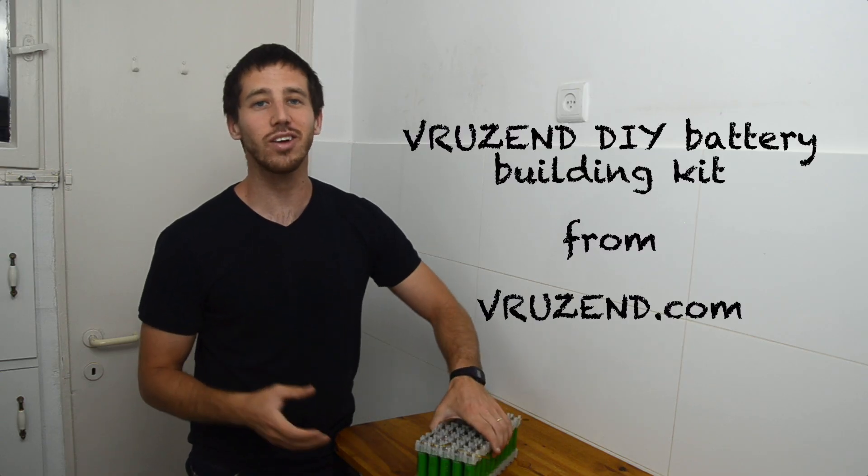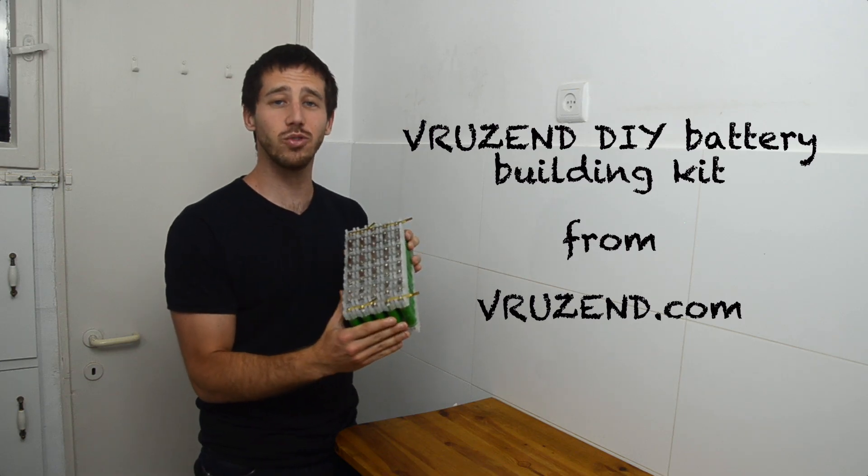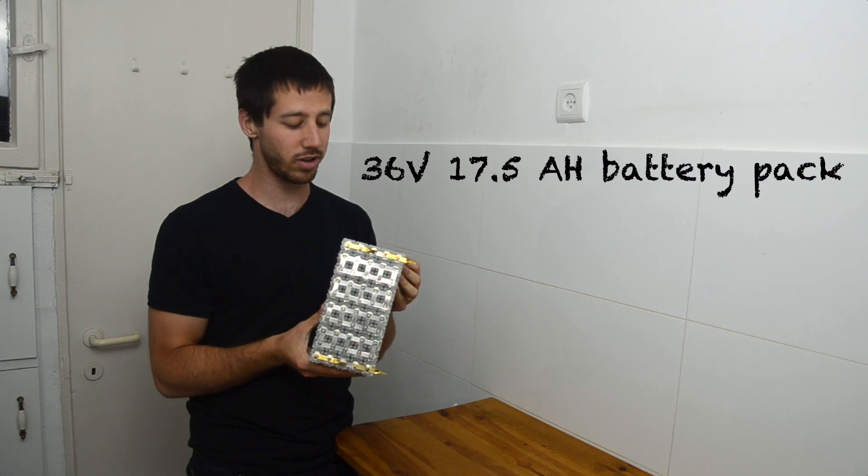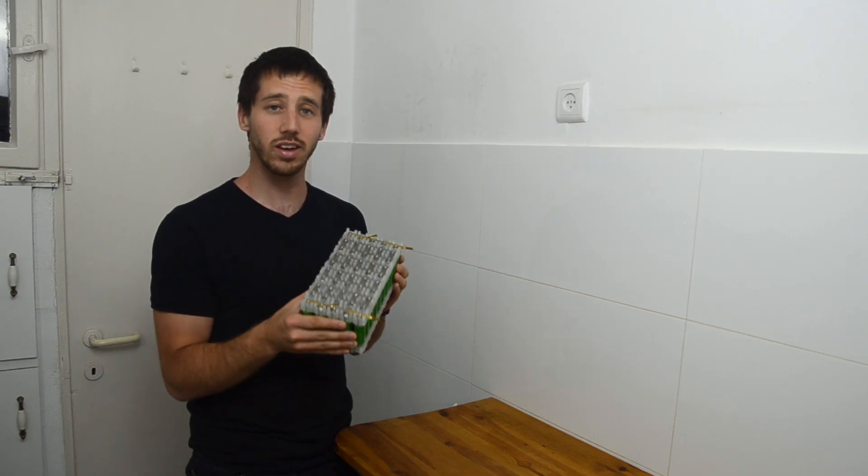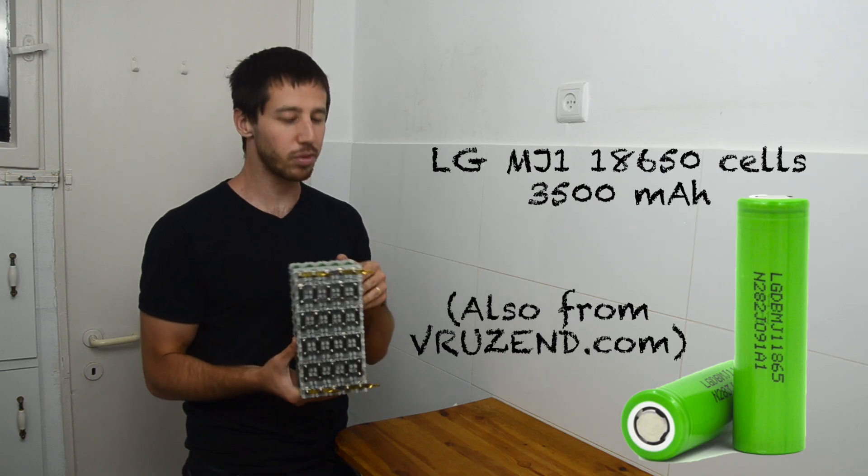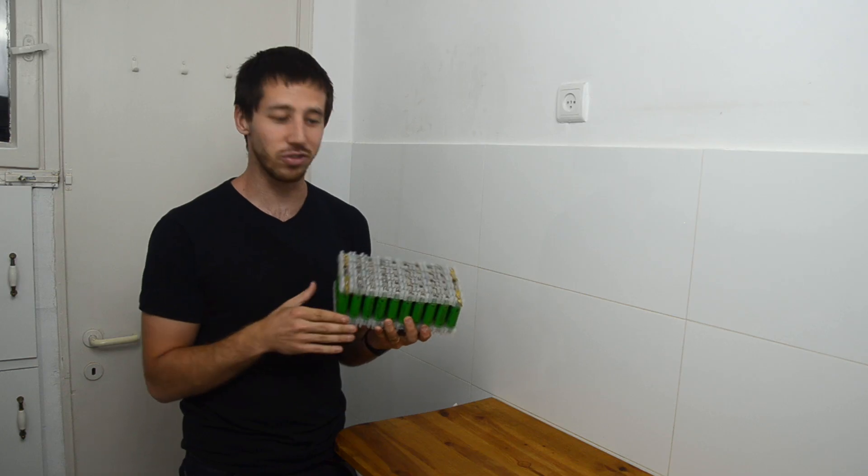It's the Vruzin do-it-yourself battery building kit from vruzin.com and today I'm going to show you how to use it to build this 36 volt 17 and a half amp hour battery using the Vruzin kit as well as LG MJ1 18650 cells. But you can use it to build any size battery you want, this is just the size I'm going to do in this tutorial.